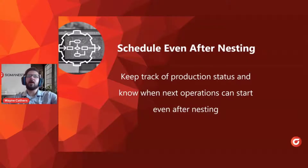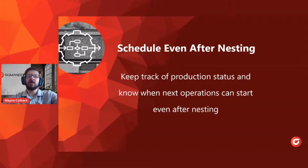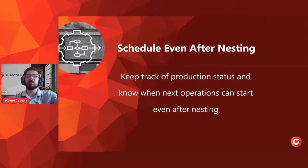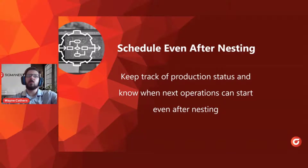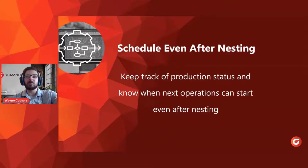The next major benefit we'll talk about is scheduling even after nesting. Most of you, if you're not using a whiteboard or Excel, may have an ERP system or other software for scheduling. But one of the biggest pain points for customers in our industry where we are nesting is that once the parts have been nested, that's kind of where the scheduling engines fall apart. Other scheduling softwares on the market don't really have the ability to understand that a particular part is spread out across five or six different sheets. Because our system has a direct integration with CAD CAM software such as Sigma Nest and Sigma CTL, we can track which parts are on which programs and schedule those programs to be cut in order based on which parts are on them.